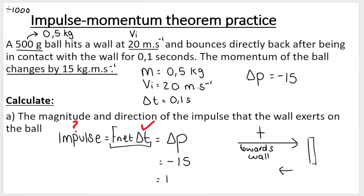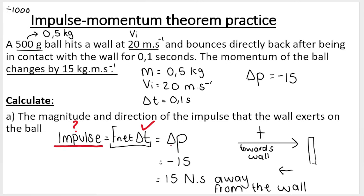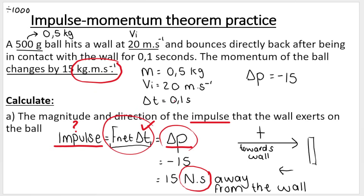The impulse is negative 15 Newton seconds away from the wall. Impulse is therefore equal to change in momentum. The reason I use Newton seconds as my unit is because that is the unit for impulse. Although they gave the change in momentum unit as kilograms meters per second, change in momentum equals impulse, and they are asking for impulse. So please write your unit as Newton seconds — N·s. This is not Newtons per second; that's a very different unit. The negative just means away from the wall.